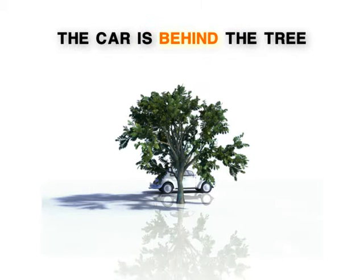Now the car is behind the tree. The tree is still our reference point, but now the reference direction is behind. We use a negative sign to show that the car is behind the tree.